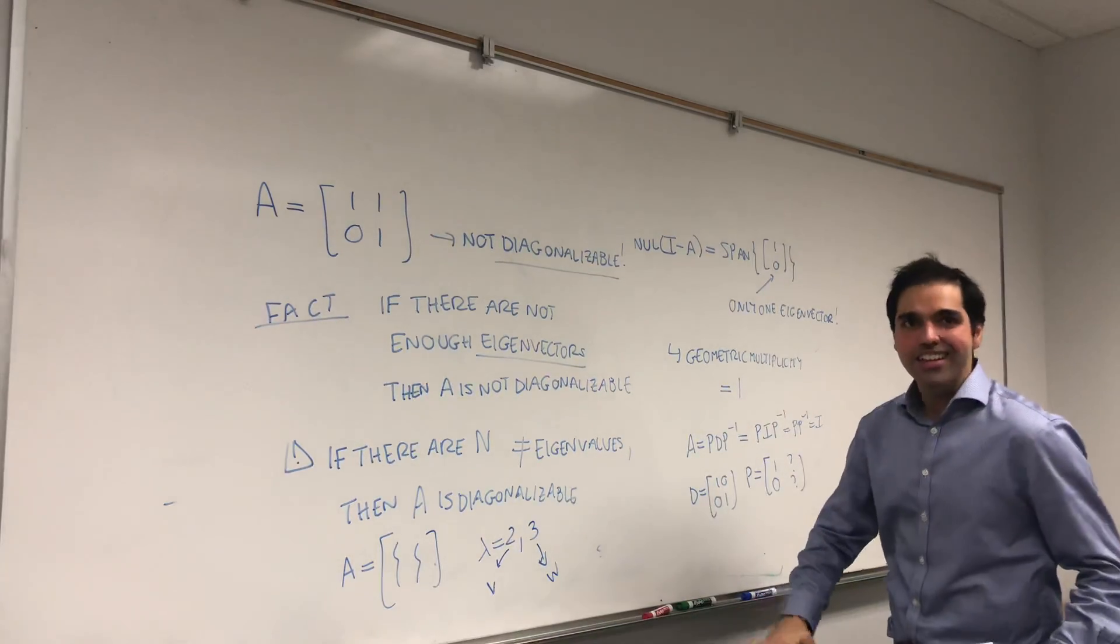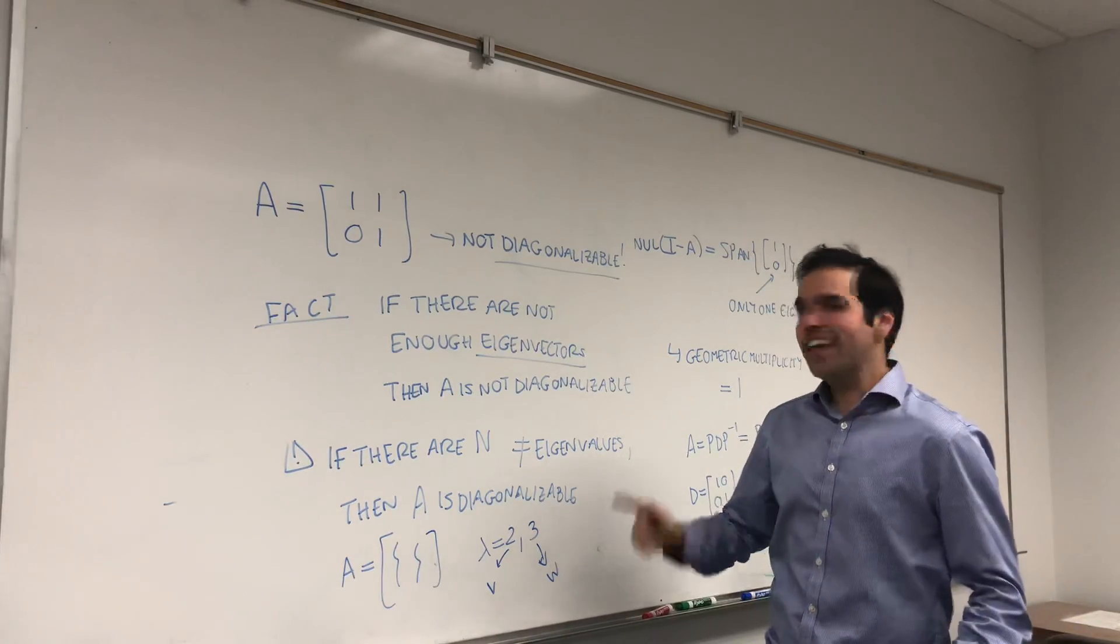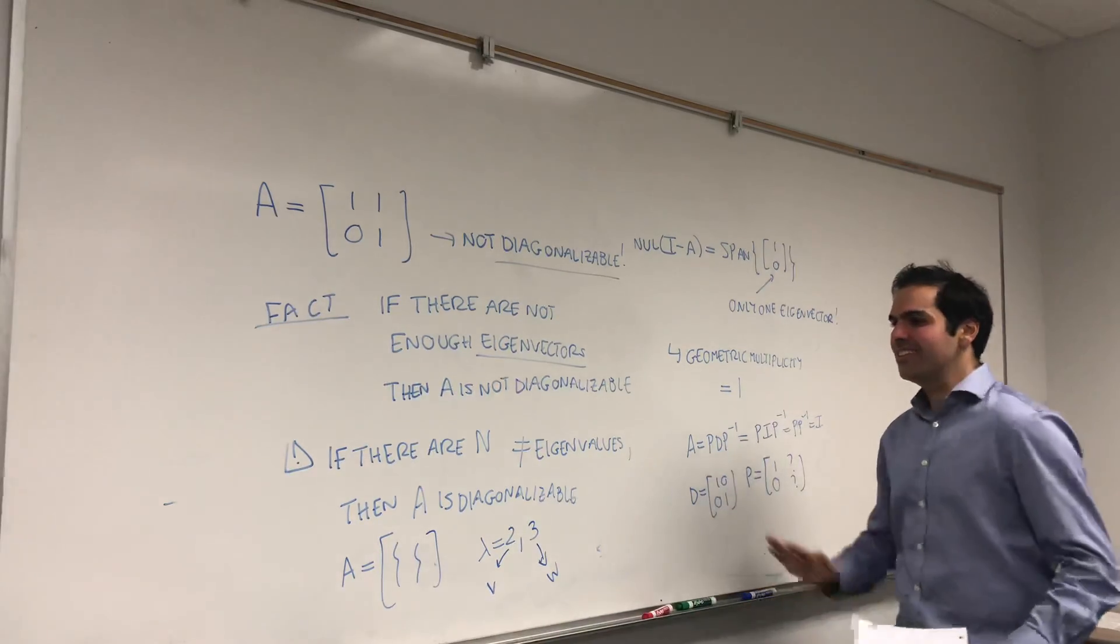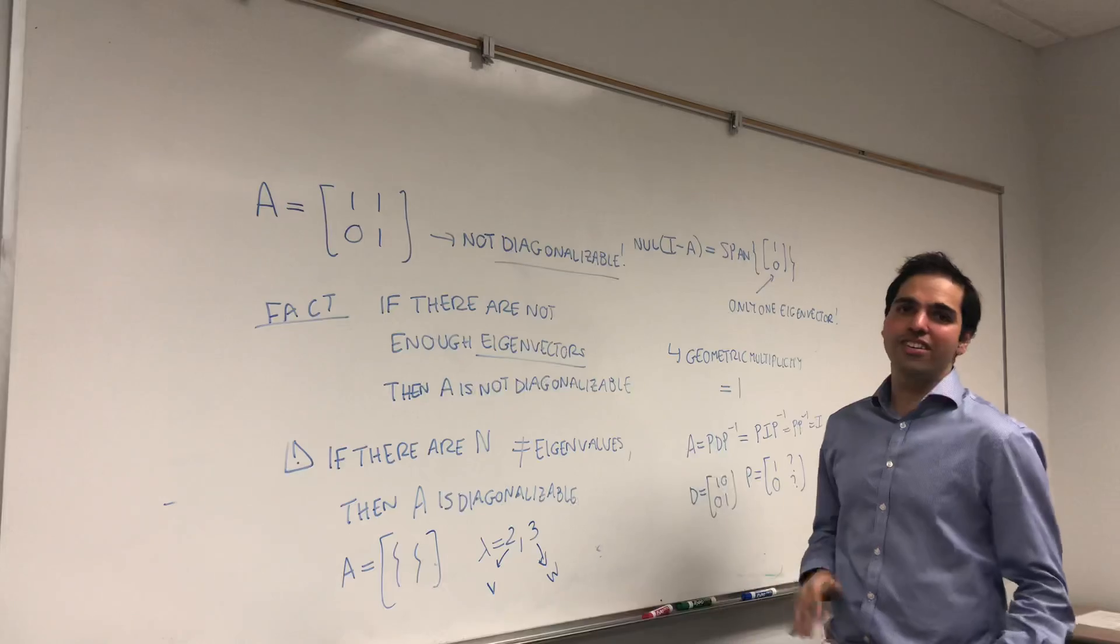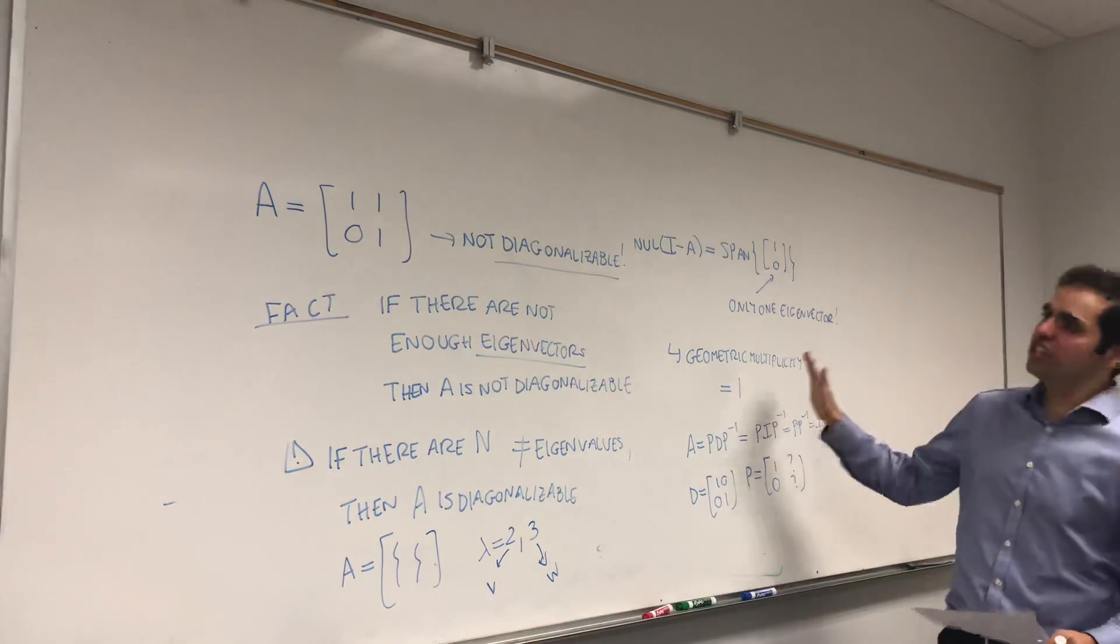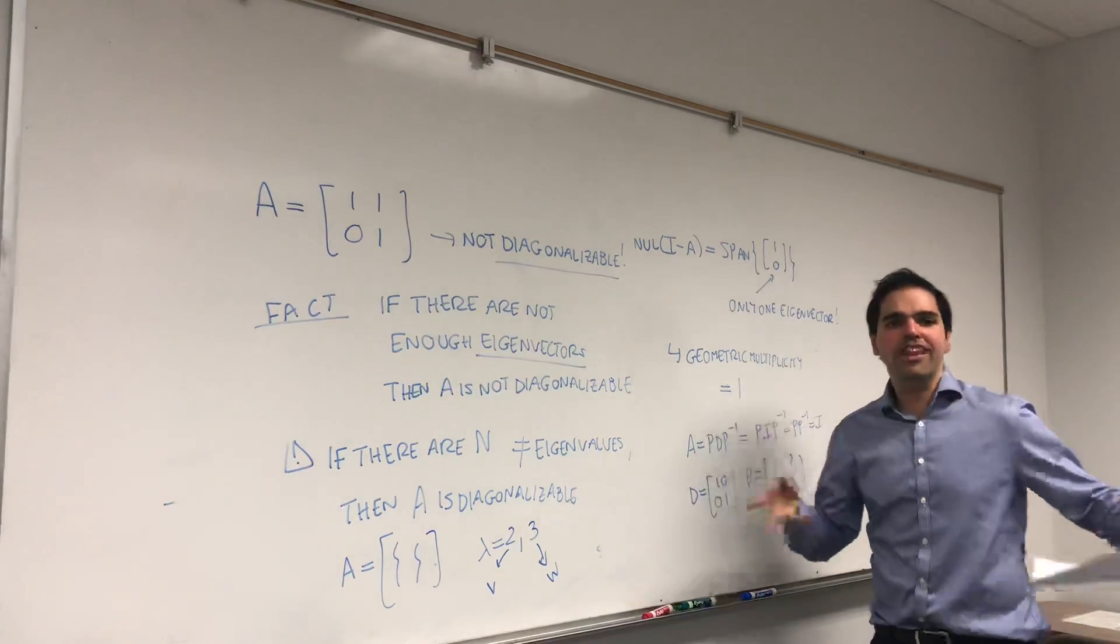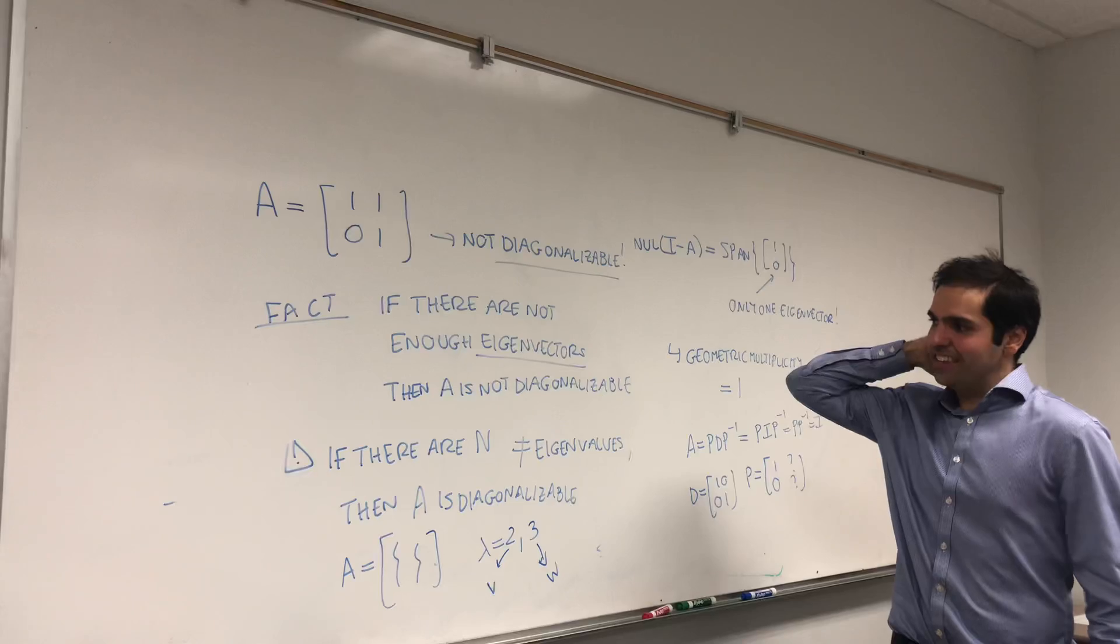But careful! Even if a matrix just has one eigenvalue, it could still be diagonalizable, like the identity matrix. So this is not an if and only if condition. It's just a sufficient condition to have diagonalizable. But in general, you have to look at all the eigenvectors. And heuristically speaking, if there are not enough of them, then it's not diagonalizable.